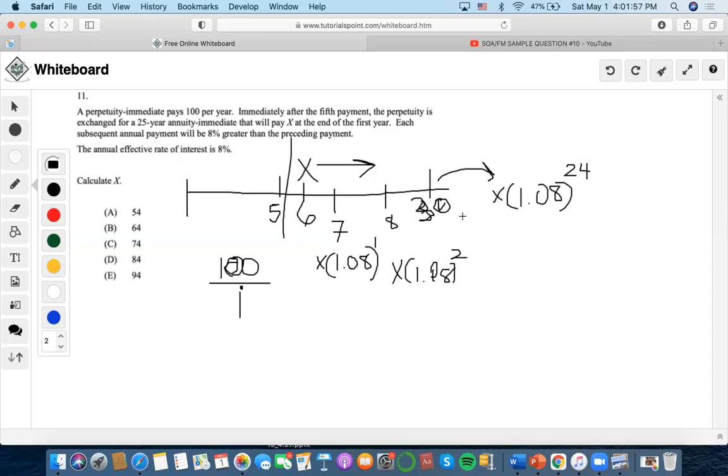So we start to see like a geometric progression after a while. We also have to refer these payments to a comparison date. So I'm going to make the comparison date at time 5. That would mean that we would also have to discount each payment. So the payment at 6 would be X times V, discounted V squared, V cubed, and the last one will be discounted V to the 25.